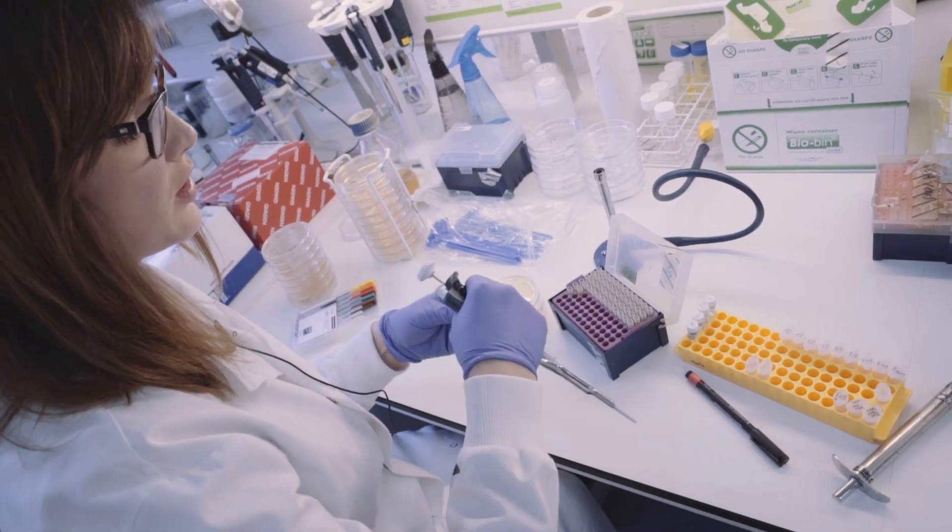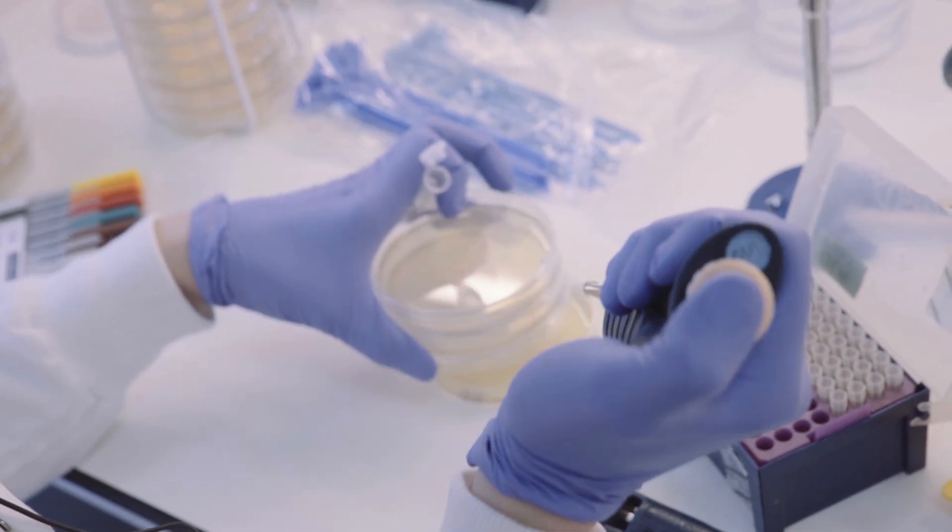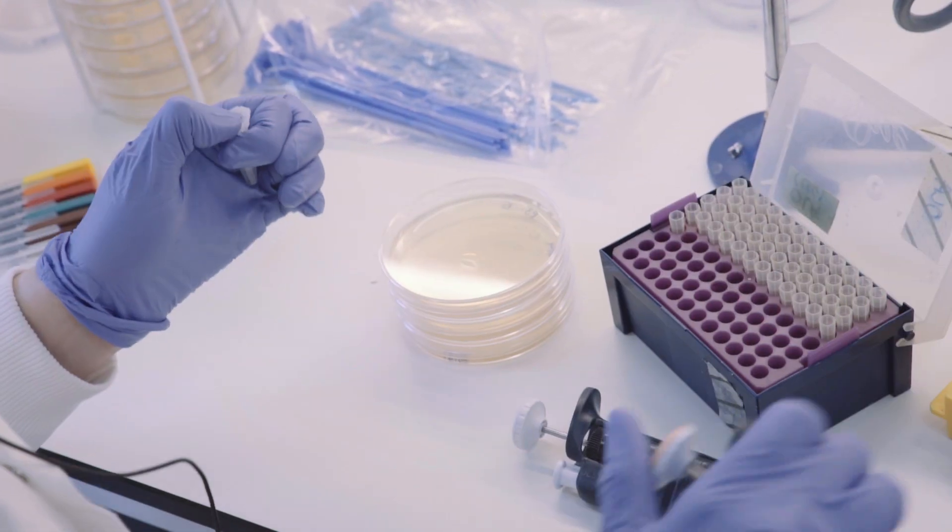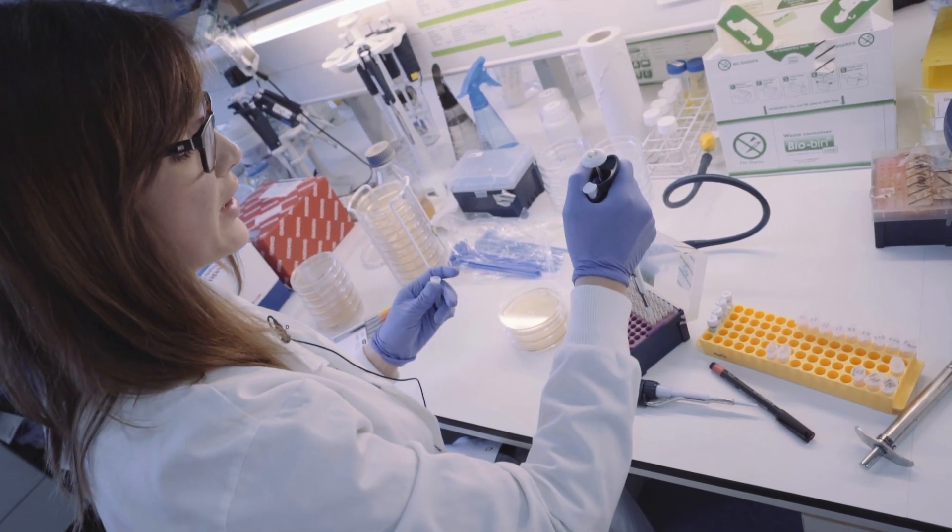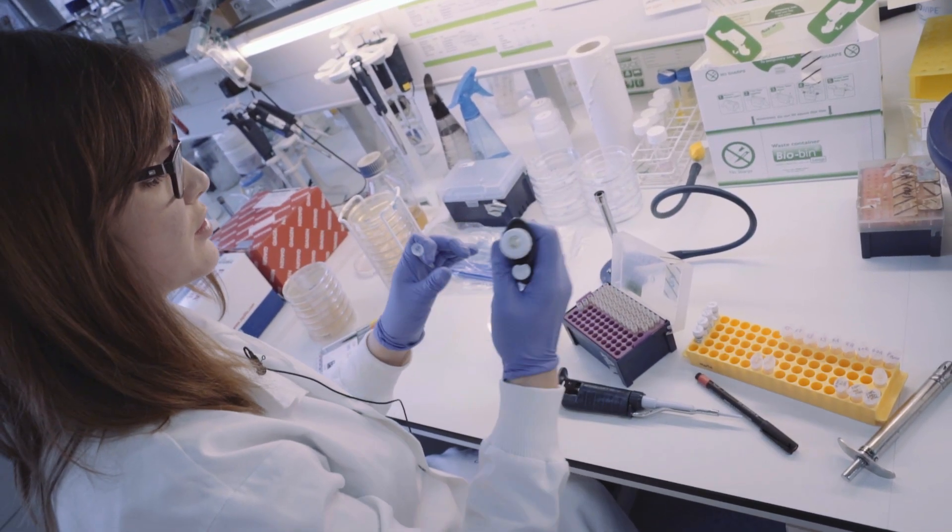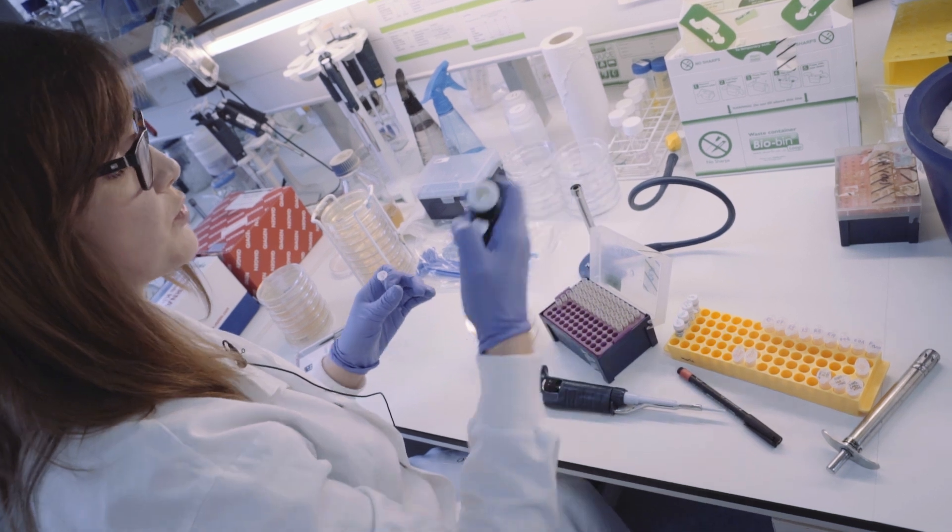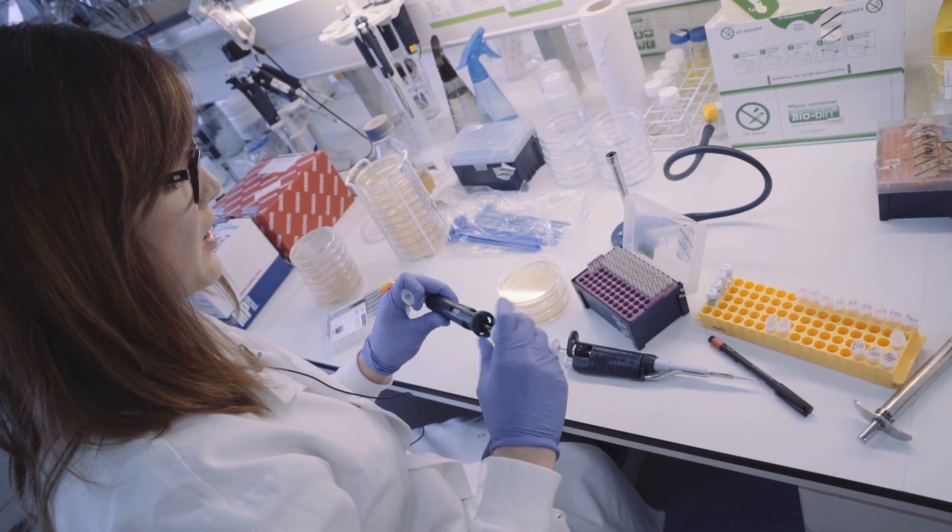Everything has to be optimized in an E. coli strain because it's much easier to work with. Once we've optimized what we want to integrate into the chromosome of Clostridium Sporogenes, we progress from there.